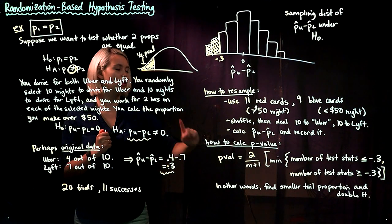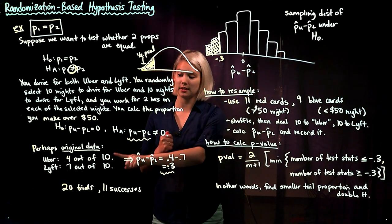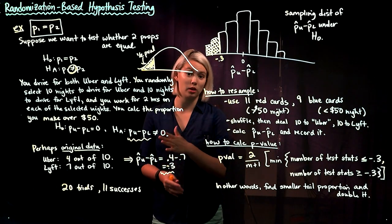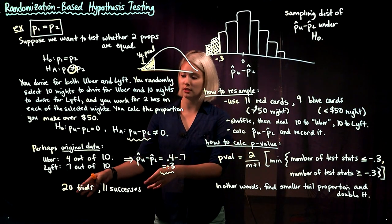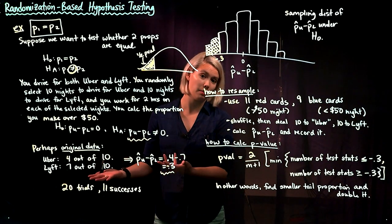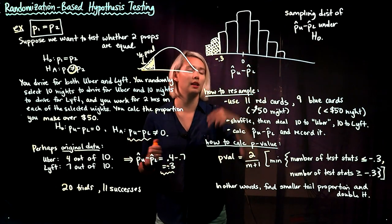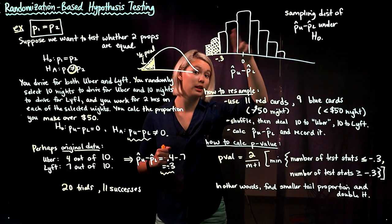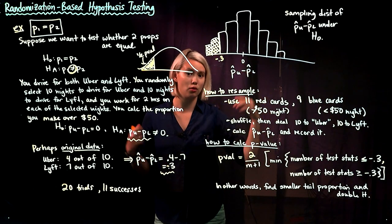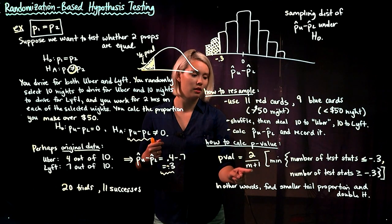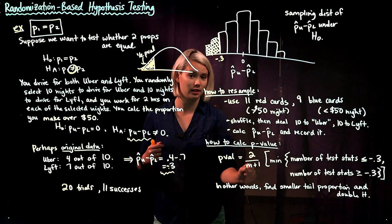One important note: when building your sampling distribution, make sure to include your original test statistic as well, since in hypothesis testing we assume the null is true until we have evidence otherwise. So the sampling distribution includes all resample test statistics plus the original data's test statistic. If you have M resamples, the denominator for your proportion is M plus 1.